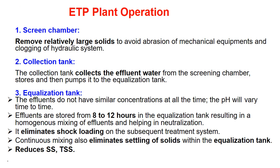Now we will discuss ETP plant operation. The first is the screen chamber — it removes relatively large solids to avoid abrasion of mechanical equipment and clogging of the hydraulic system. Number two is the collection tank, which collects effluent water from the screening chamber, stores it, and then pumps it to the equalization tank.